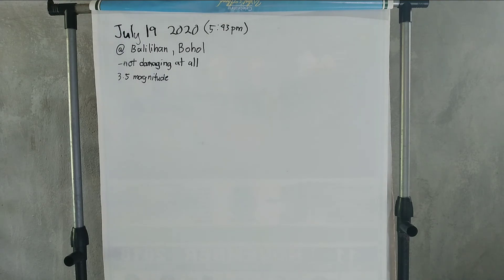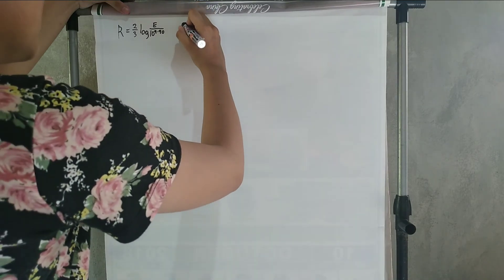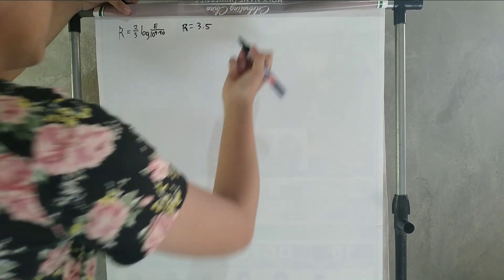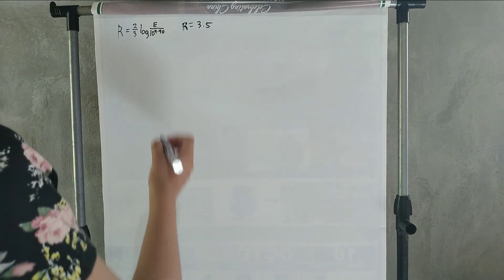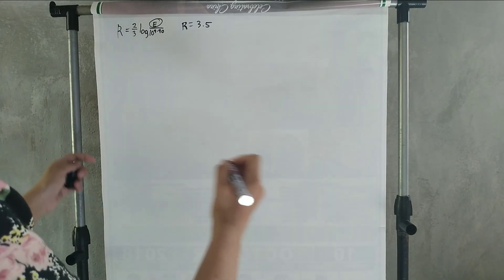Now, we're going to use the Richter scale and derive a formula from it to solve the energy released of the earthquake. Okay, first things first. We're going to write the given of the problem, which is the magnitude, 3.5. Since we're going to look for E, we have to substitute the given and derive a new formula from it.